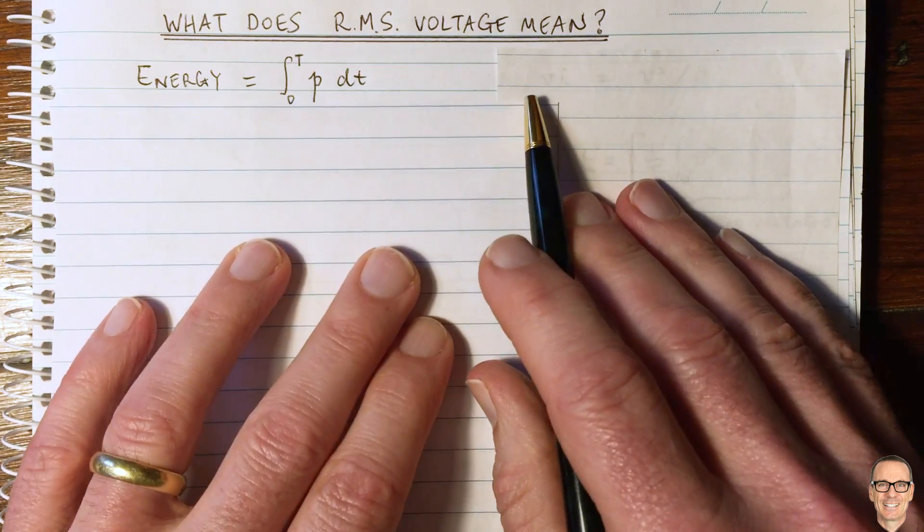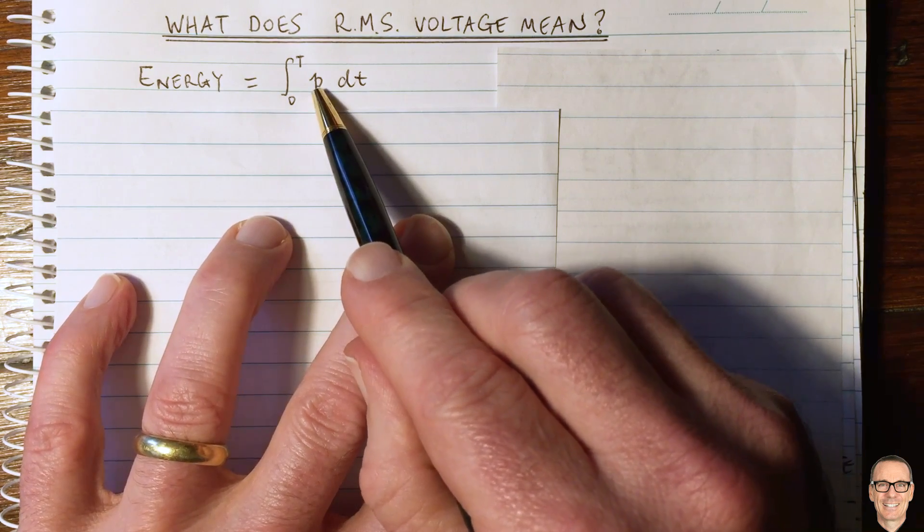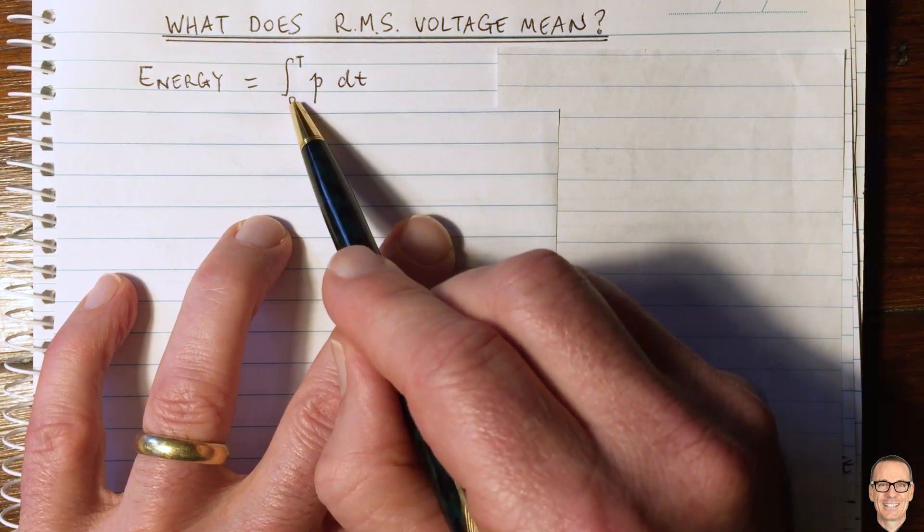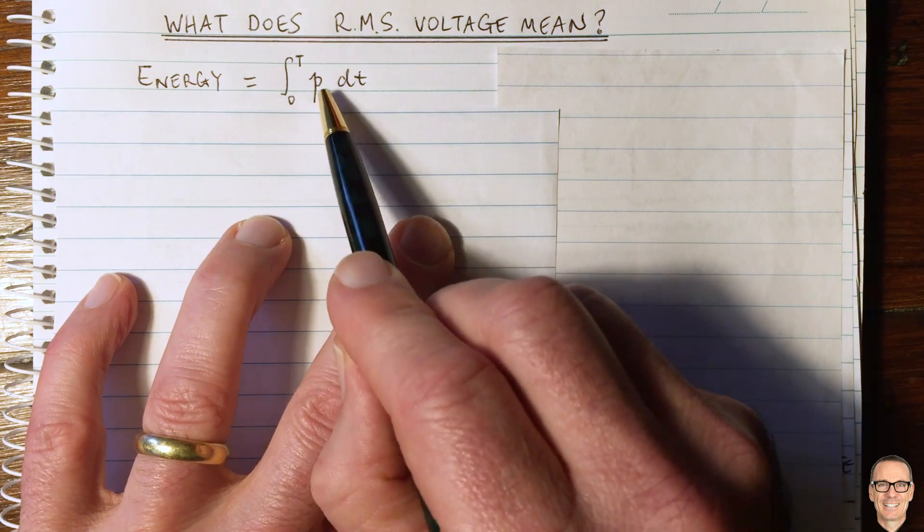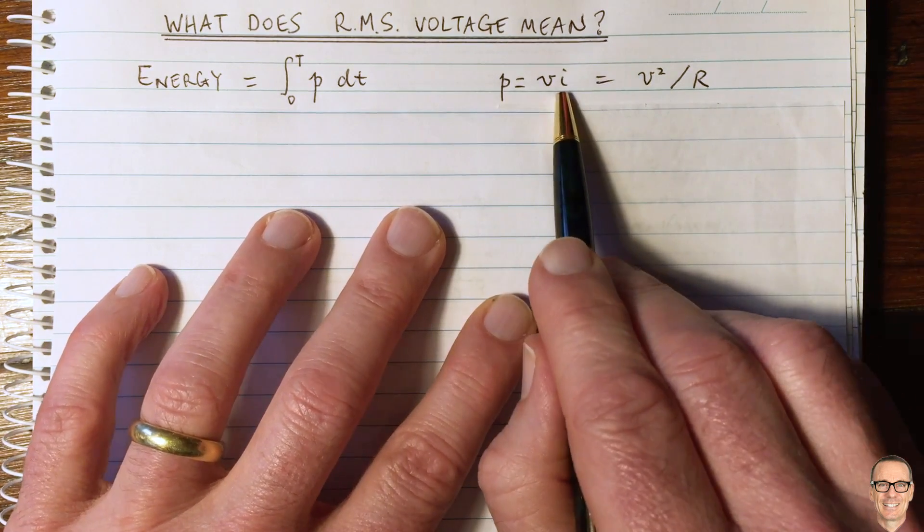Let's start by thinking about energy. So energy is the instantaneous power added up over time. And we can write that mathematically with an integral. And the instantaneous power for an electric circuit is the voltage times the current.